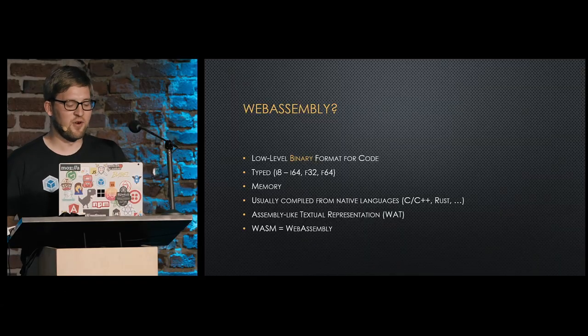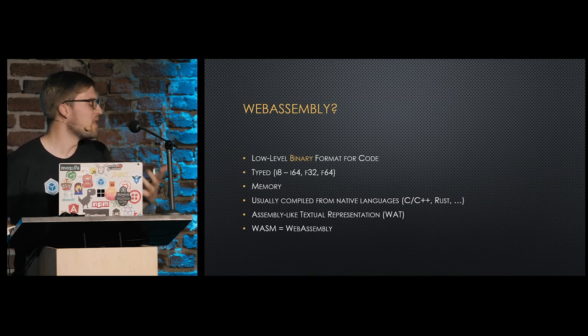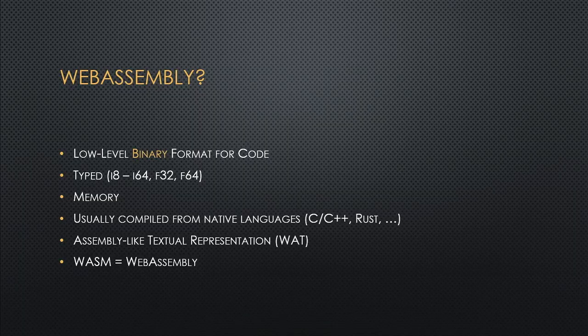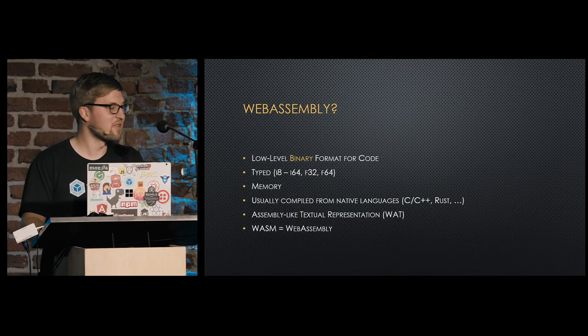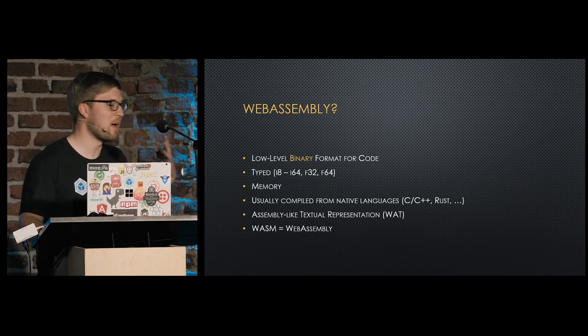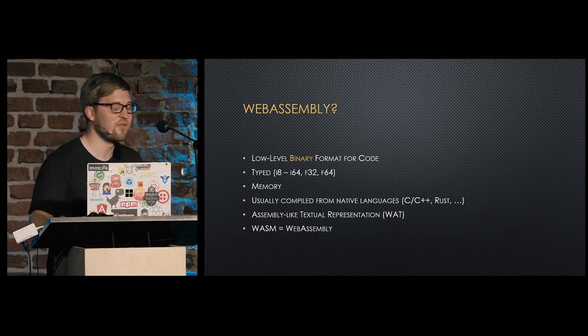Let's start with WebAssembly. WebAssembly is a low-level binary format for native code which is usable in the web. The only types available are integer and float types — no strings, no complex types, only very basic types, so it's more a low-level format. You also have access to memory, so you can put strings into memory, but it's more complex than native string types in JavaScript.